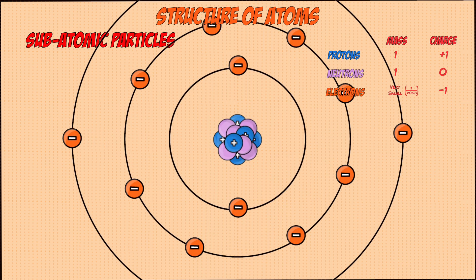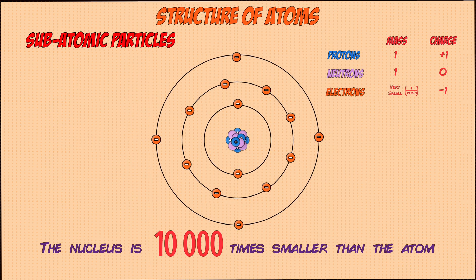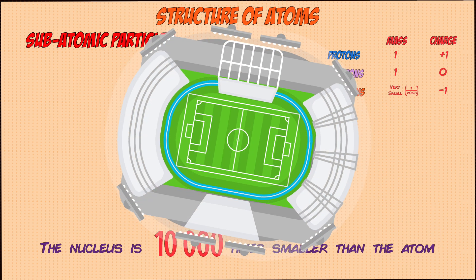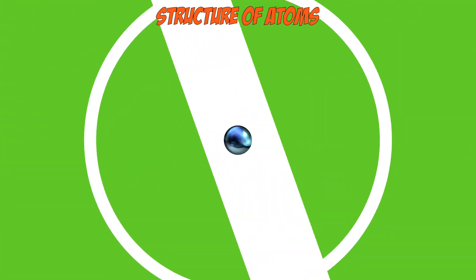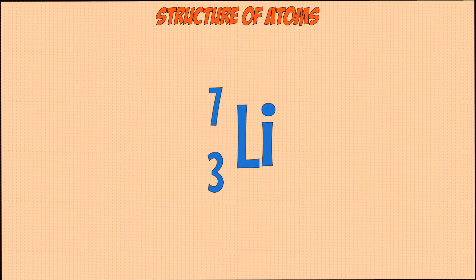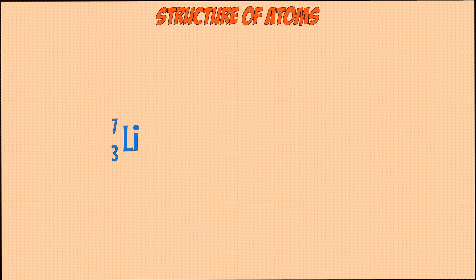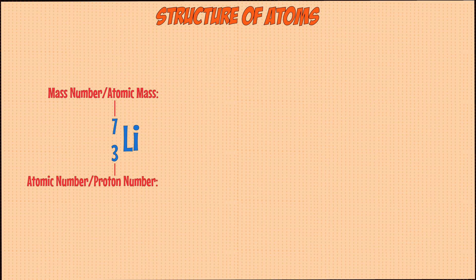The nucleus in the middle has a radius of 1×10⁻¹⁴ meters, which is 10,000 times smaller than that of the whole atom. That's the equivalent of a football stadium as the atom and a marble in the middle being the nucleus. Atoms of specific elements can be represented with the symbol of the specific element and two numbers next to it. The larger number is known as the mass number or atomic mass, and the smaller number is known as the atomic number or proton number.